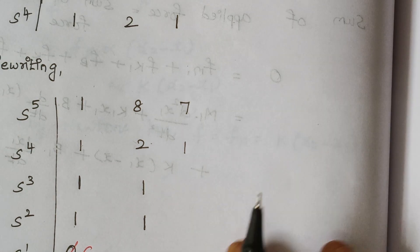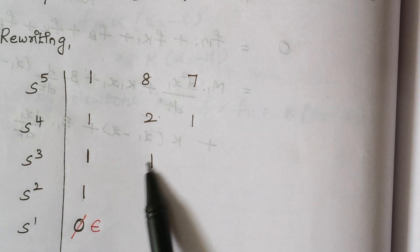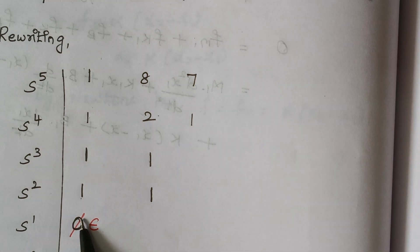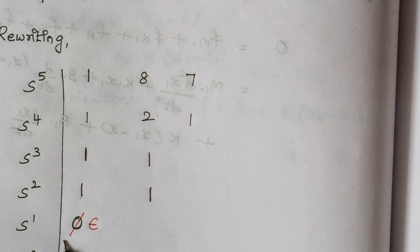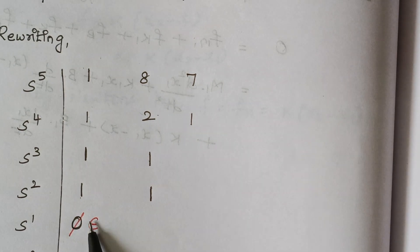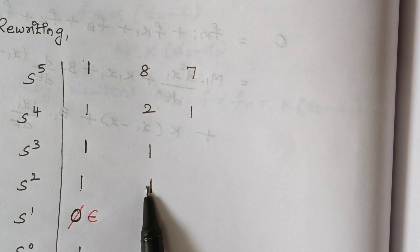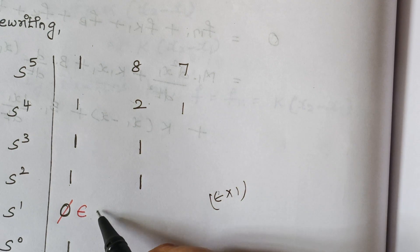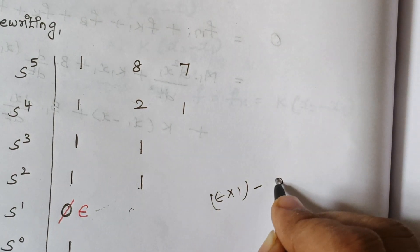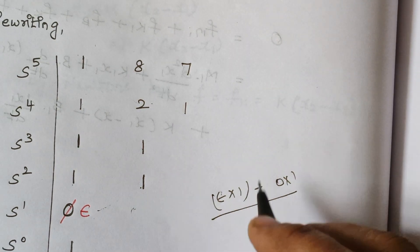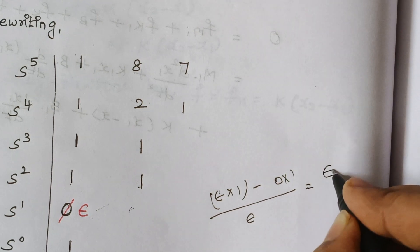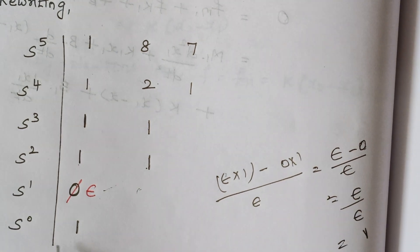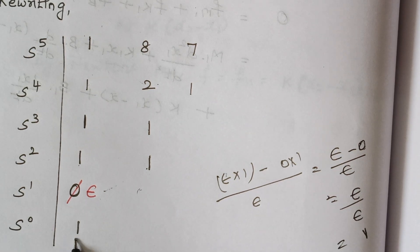For S¹: (1×1 − 1×1) divided by 1 gives 1 minus 1 equals 0. Whenever we have 0, we replace it with epsilon. Proceeding with epsilon: (epsilon×1 − 0×1) divided by epsilon equals epsilon divided by epsilon, which equals 1. So S⁰ has one element with value 1.